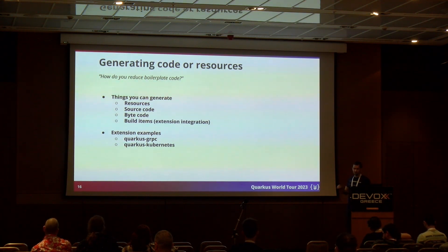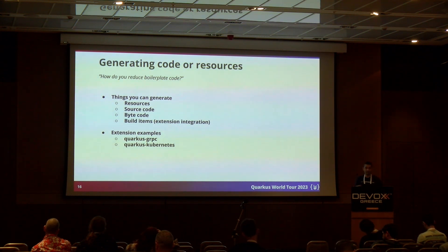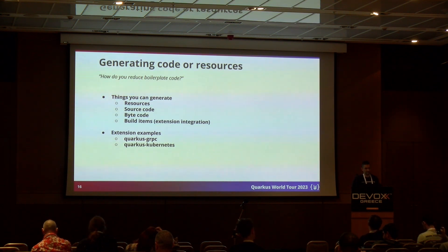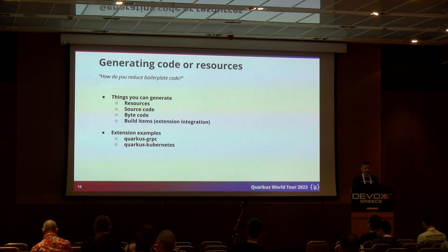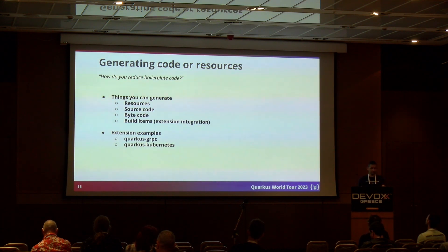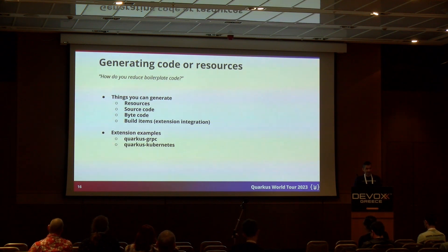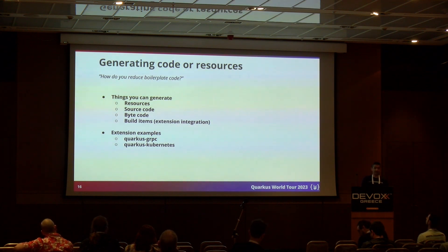Last but not least, through extensions one can generate all kinds of things that may be useful for their application — handling boilerplate, generating resources, source code, and more. Through extensions you are able to generate pretty much anything you want: deployment descriptors, arbitrary text files, source code, beans that will be automatically added to your app at runtime, and even directly generate bytecode for your app.